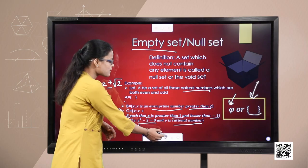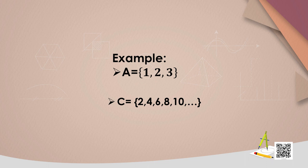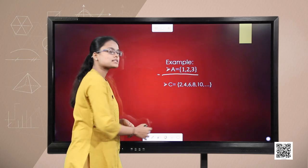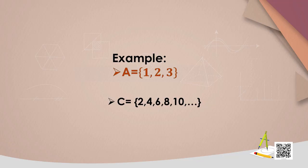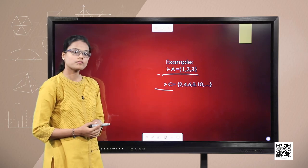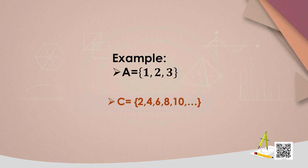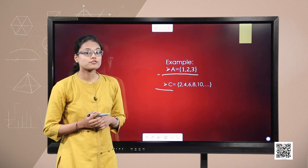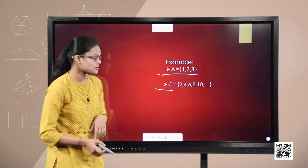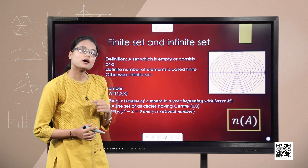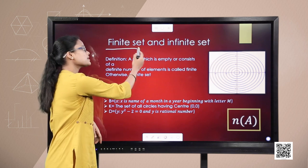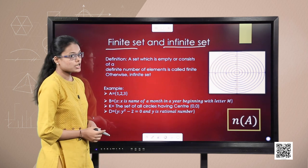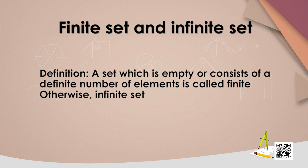Now let us observe another example. How many elements are there in set A? Three elements. How many elements are in set C, the set of all even numbers? They are 2, 4, 6, 8, 10 and so on — infinitely many. This leads us to the next type of set, based on the number of elements. A set which is empty or consists of a definite number of elements is called a finite set; otherwise, it is infinite.